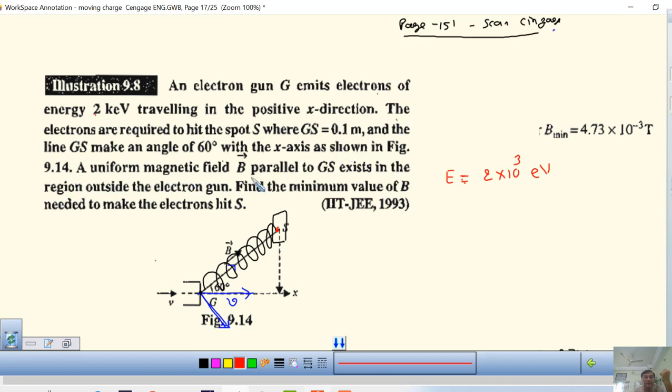A uniform magnetic field B parallel to GS. Parallel to GS is appearing. This is the direction of magnetic field. In region outside the electron gun, find the minimum value of B needed to make the electron hit there. So, we will hit it later.